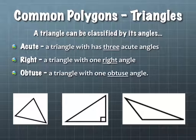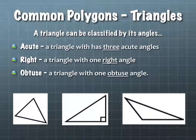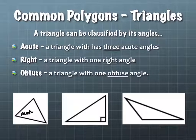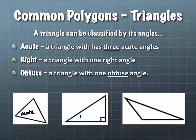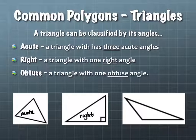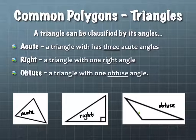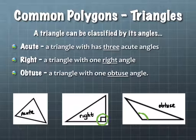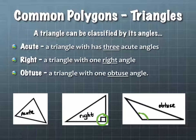Let's label the ones below. The first triangle is acute. The second one is a right triangle. And the third one is obtuse, because that angle is more than 90 degrees. The middle one is a right triangle because that angle is exactly 90 degrees. So we can classify triangles by their angles.